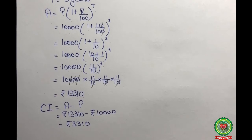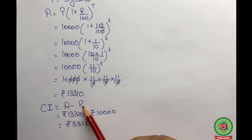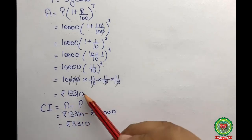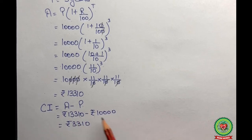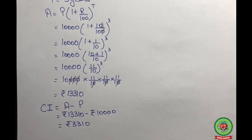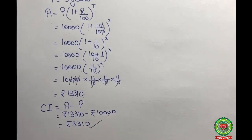Now we find compound interest using the formula CI = Amount − Principal. We get: 13,310 − 10,000 = 3,310. So the compound interest is rupees 3,310. Students, you have got a worksheet in your homework based on this type of problem, so solve that worksheet.